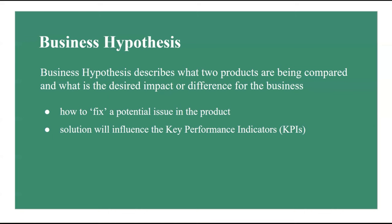The second parameter is the significance level, which is also the probability of Type 1 error — the likelihood of rejecting the null and detecting a treatment effect while the null is actually true. This value, defined by Greek letter alpha, is the probability of making a false discovery, often referred to as the false positive rate. Generally we use a significance level of 5%, indicating a 5% risk of concluding a statistically significant difference between experimental and control variant performances when no actual difference exists.